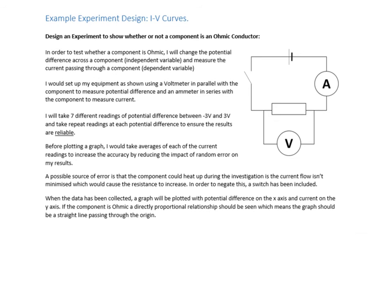Now let's go through a worked example. First key thing whenever you're designing an experiment with electricity: use a circuit diagram. It's so much easier to explain how you're organising things with a diagram, even if it's a longer written answer question. So we're looking at whether a conductor is an ohmic one. We're going to plot a graph of I against V and see if it's ohmic. We're going to change the potential difference across the component — that's the independent variable — and measure the current passing through — that's the dependent variable. We've got a voltmeter in parallel with the component and an ammeter in series.